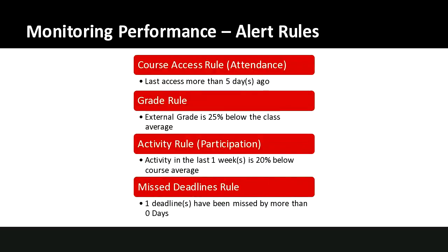The Retention Center is built on a number of building blocks known as rules. Very much like what I mentioned earlier, there's a rule for the different kinds of things people naturally try to monitor: a course access rule similar to attendance, a grade rule for monitoring how well an individual student is doing relative to the rest of the class, an activity rule similar to class participation, and a missed deadline rule. The Retention Center is automatically set up with default rules, but you can tweak them to your liking or add extras.